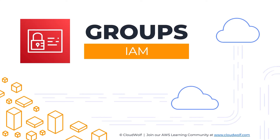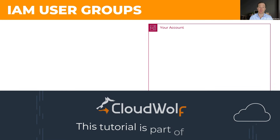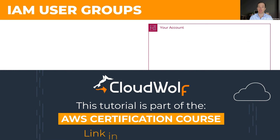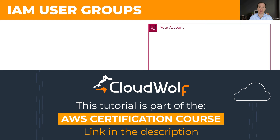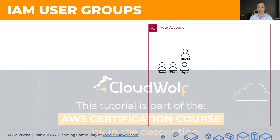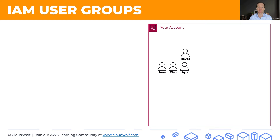Hello and welcome back. Today we're talking about groups in IAM. Let's imagine that this is our account and we have some users in this account. We have a team over here and these are developers, and they need access to the following AWS services.